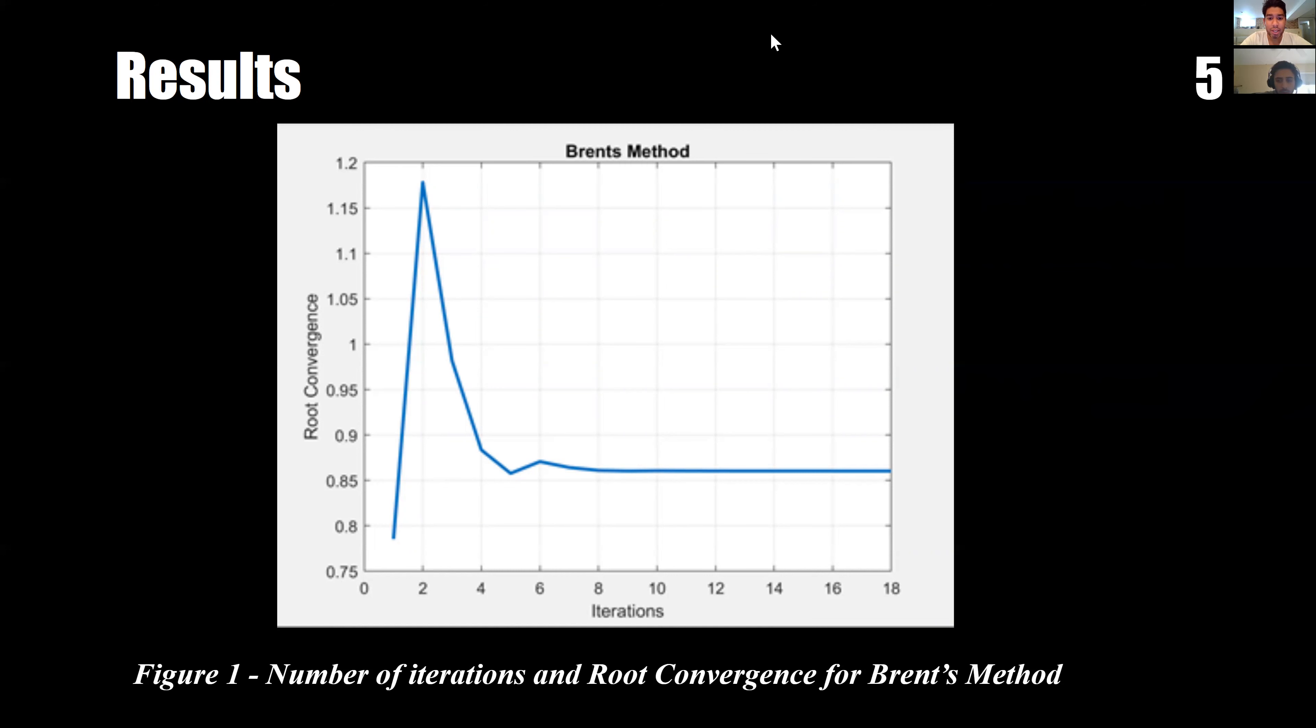The reason we see this flatness at this high number of iterations is because we have implemented Brent's method to be at a high tolerance of 1 to the negative 8 power, and therefore it will take longer to find the specific root.